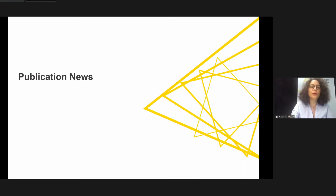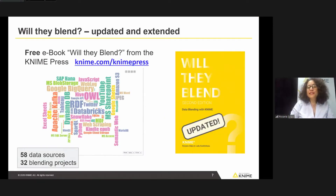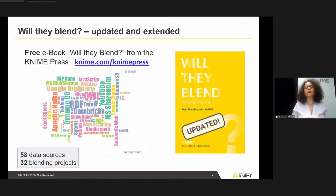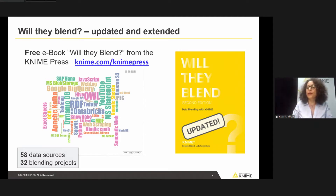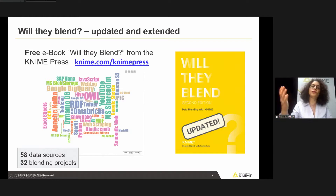Book number one: we have extended and updated the Will Day Blend book. You may remember it included a bunch of short stories about data science, with the main focus on blending data together from different data sources. In this word cloud, you can see the data sources included in the book — some of the old ones, plus new stories added for this updated release, such as DynamoDB, Databricks, and SharePoint. The book is available on the NinePress page and it's free — just download and enjoy it.